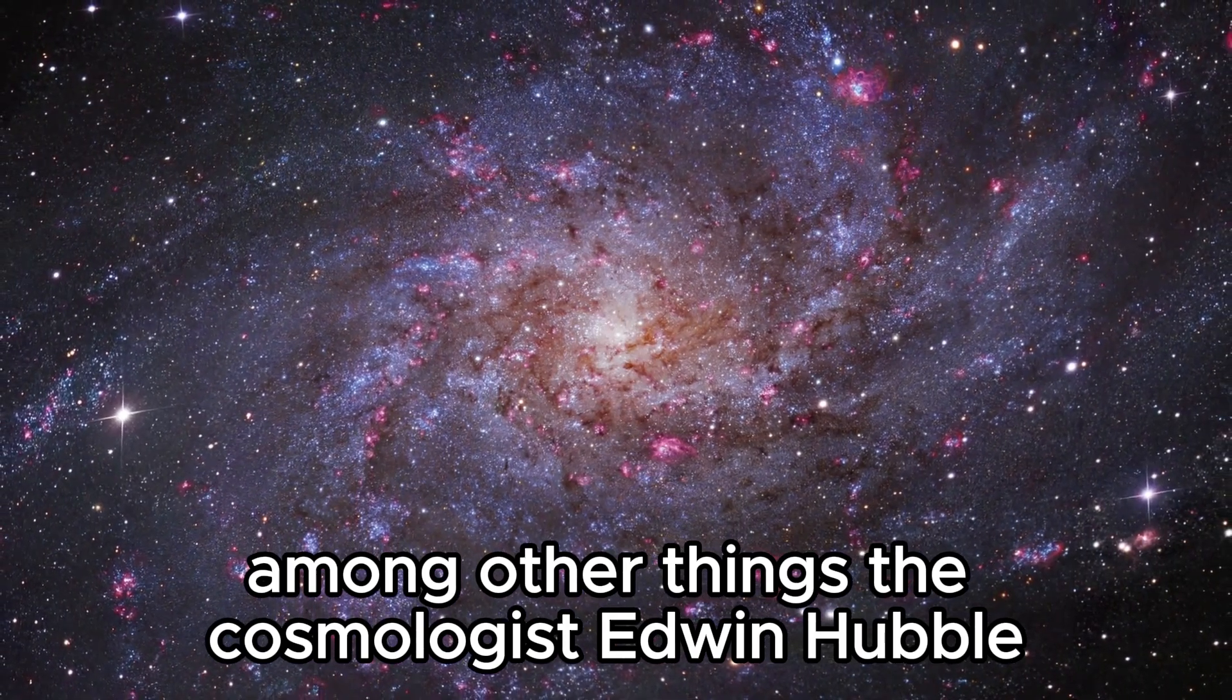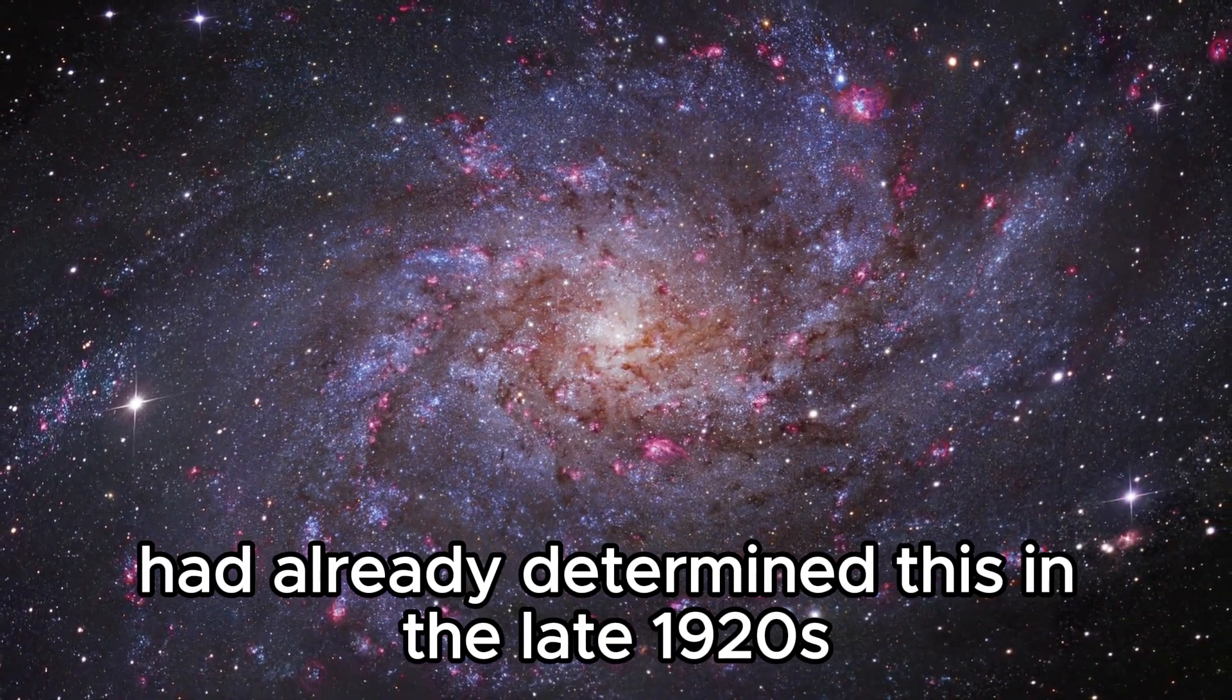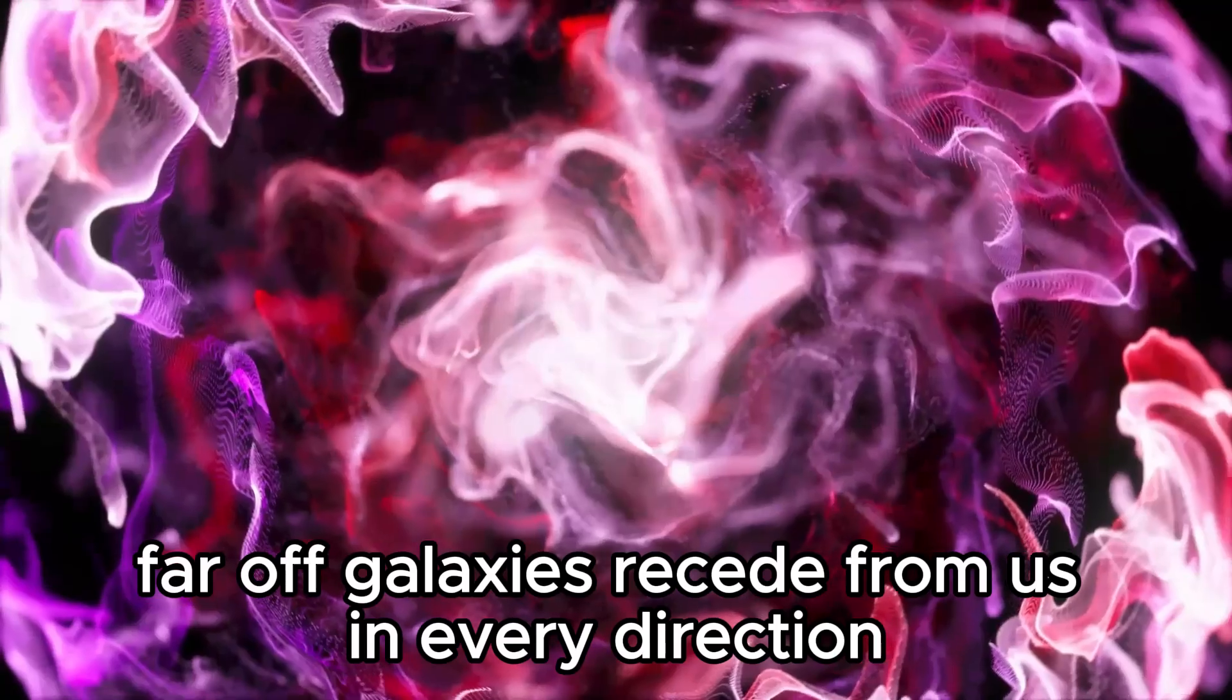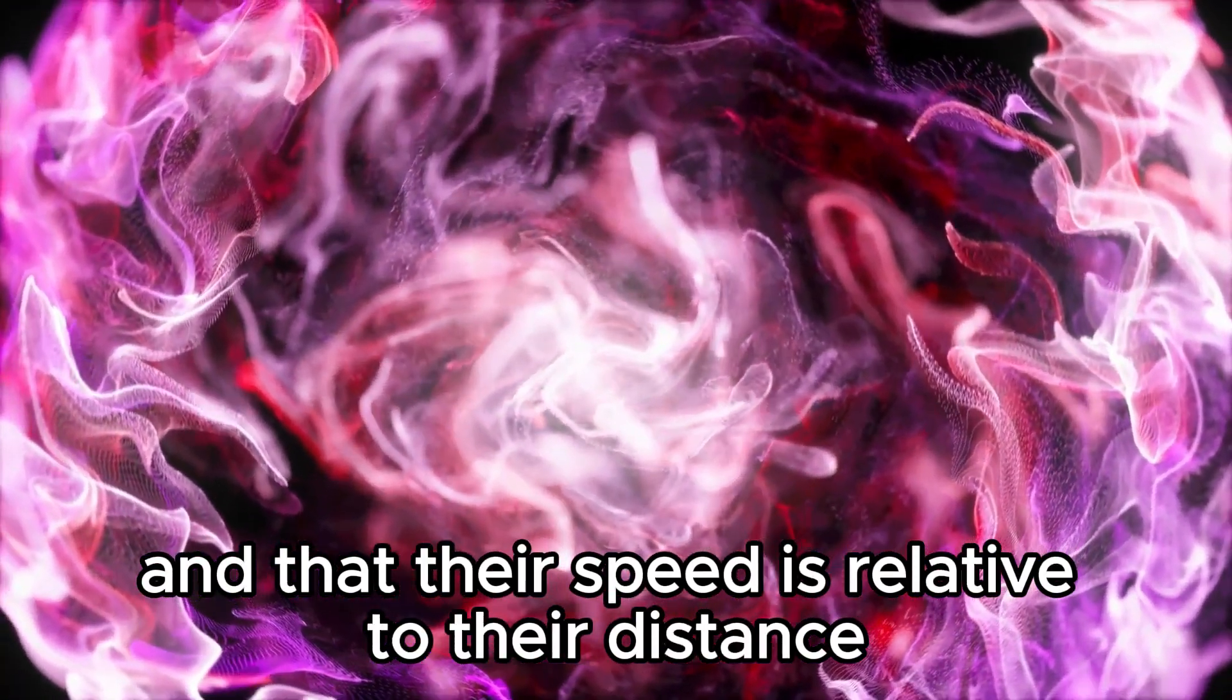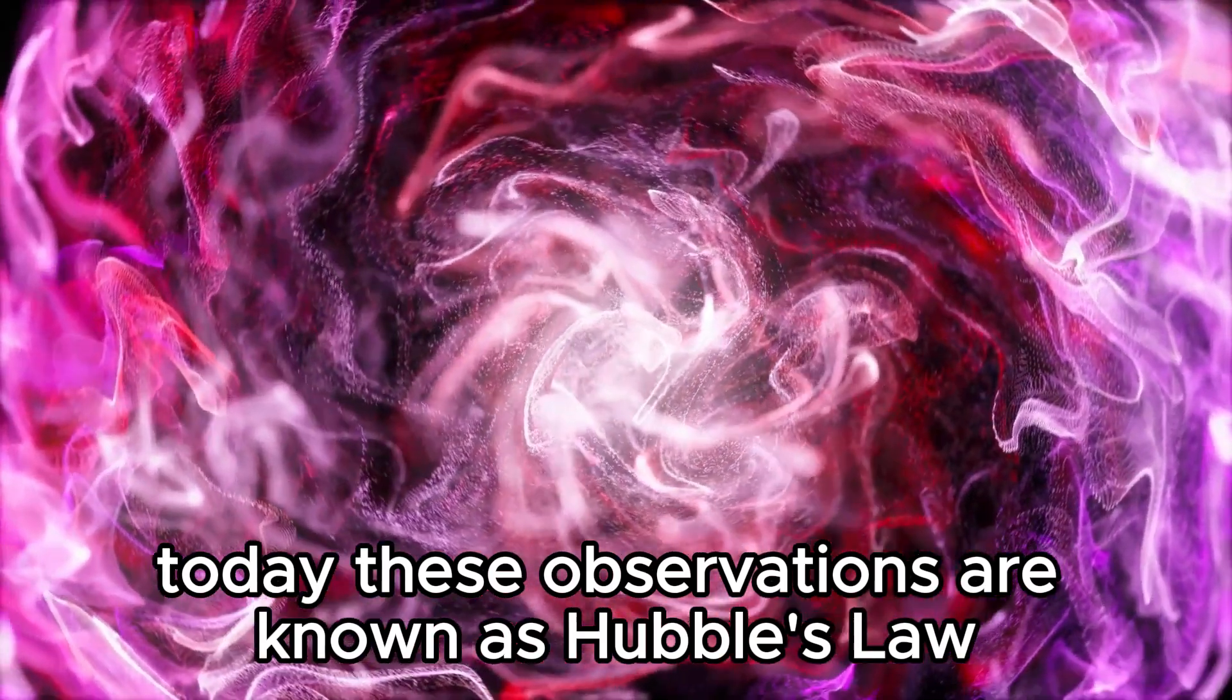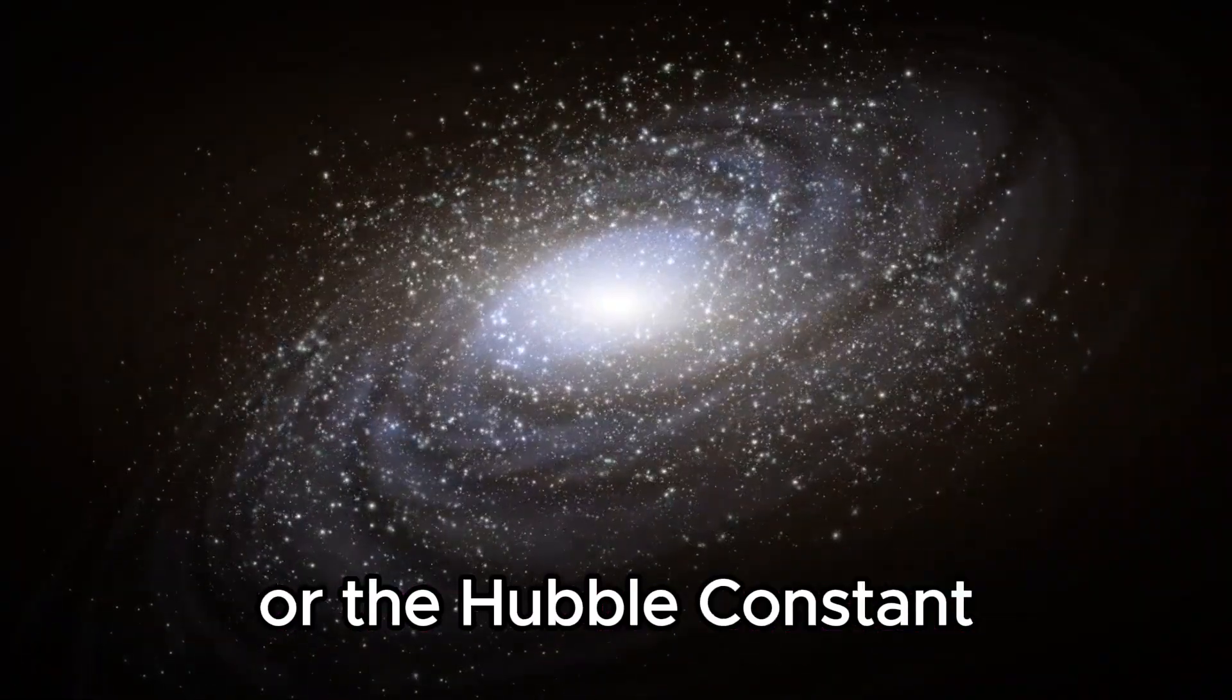The cosmologist Edwin Hubble had already determined this in the late 1920s, finding that far-off galaxies recede from us in every direction and that their speed is relative to their distance. Today, these observations are known as Hubble's Law or the Hubble Constant.